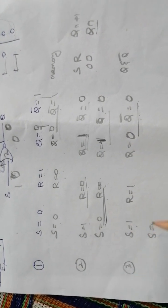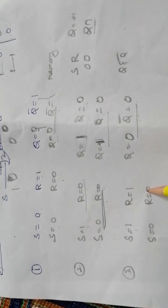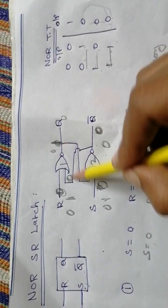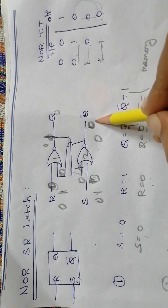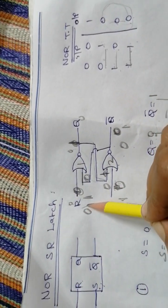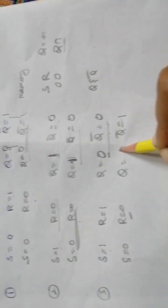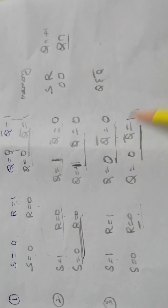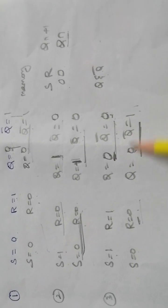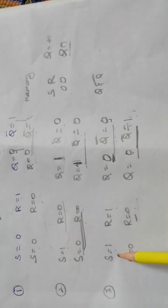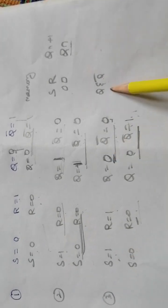If we then change both inputs from 1 to 0 — S=0 and R=0 — with the previous output Q=0: that 0 is given to this gate input, so 0,0 gives Q bar=1. Then Q bar=1 is fed to the first gate; inputs 0 and 1 give output 0, so Q=0. In the previous two cases, going to 0,0 maintained the previous state. But here, the previous state was Q=0 and Q bar=0, while the next state becomes Q=0 and Q bar=1, which is different. So applying input 1,1 leads to an invalid next state when transitioning.